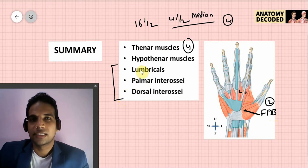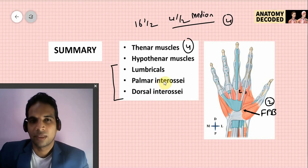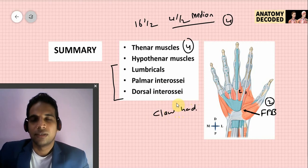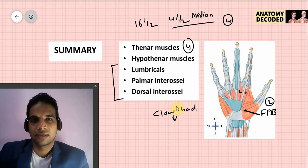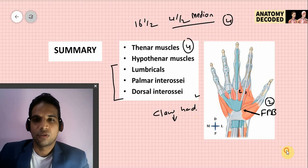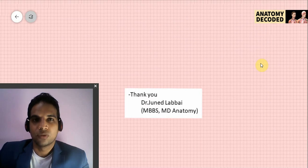For lumbricals, palmar interossei, and dorsal interossei, their actions are very important clinically: flexion of the metacarpophalangeal joint and extension of the interphalangeal joints. When affected — as in lower trunk brachial plexus injury called Klumpke's paralysis — the opposite occurs, producing claw hand: hyperextension of the metacarpophalangeal joint and flexion of the interphalangeal joints. If you have any doubts, ask in the comments section below. Thank you.